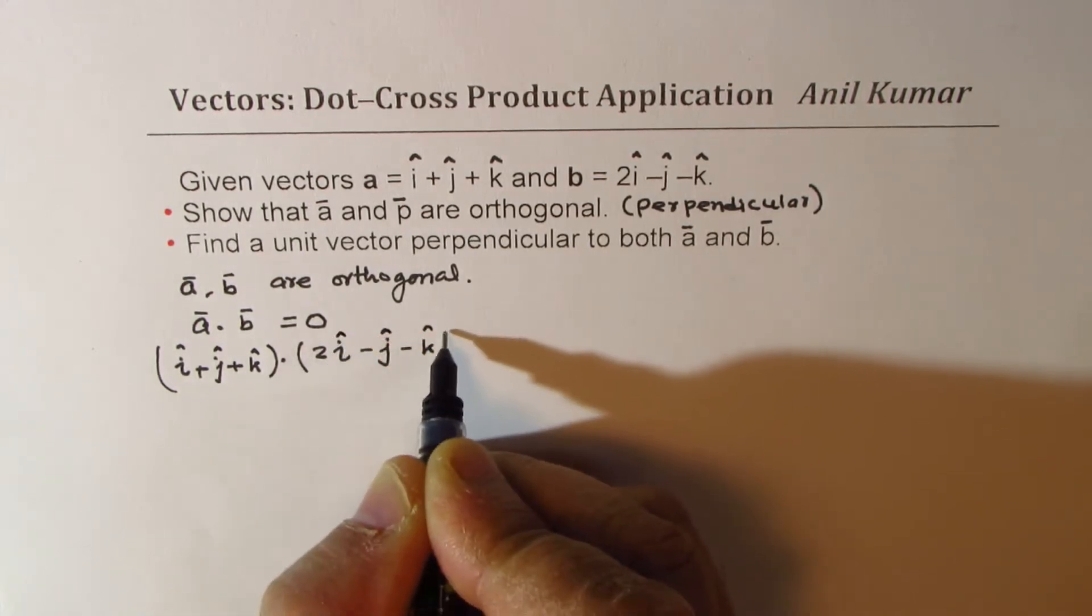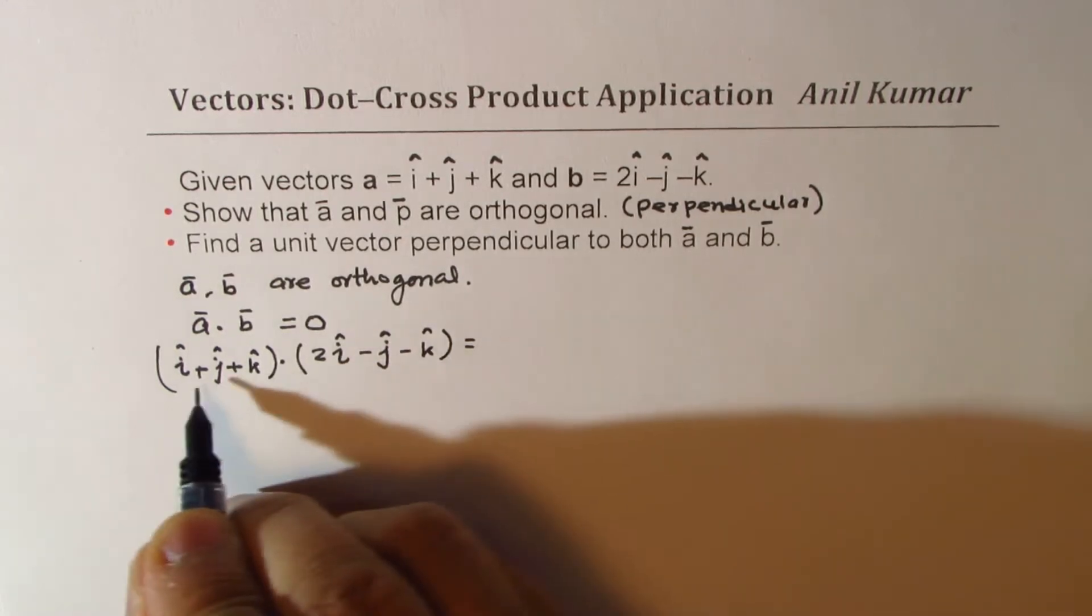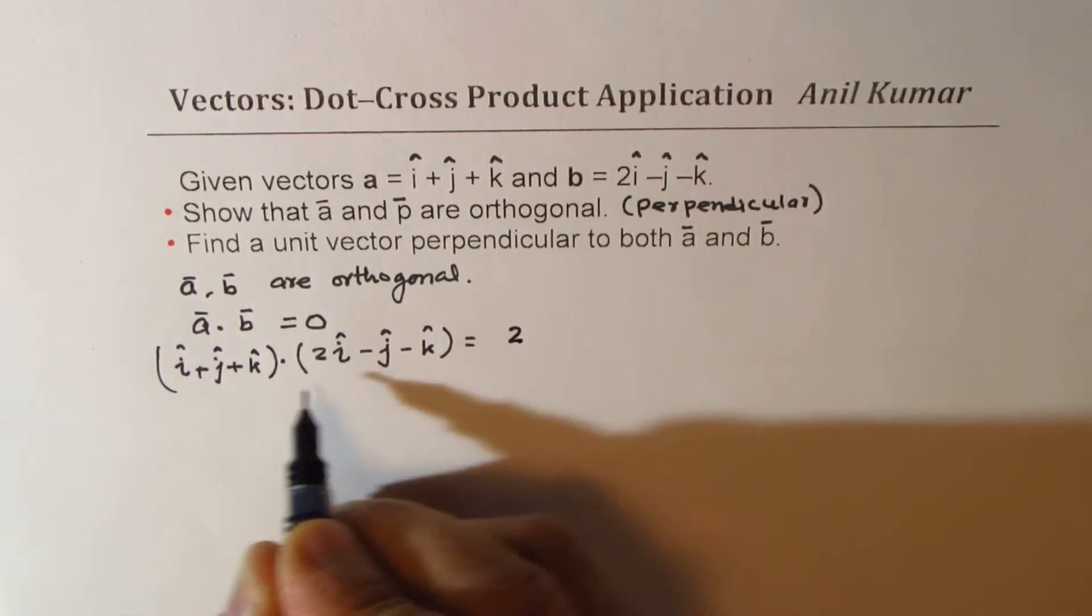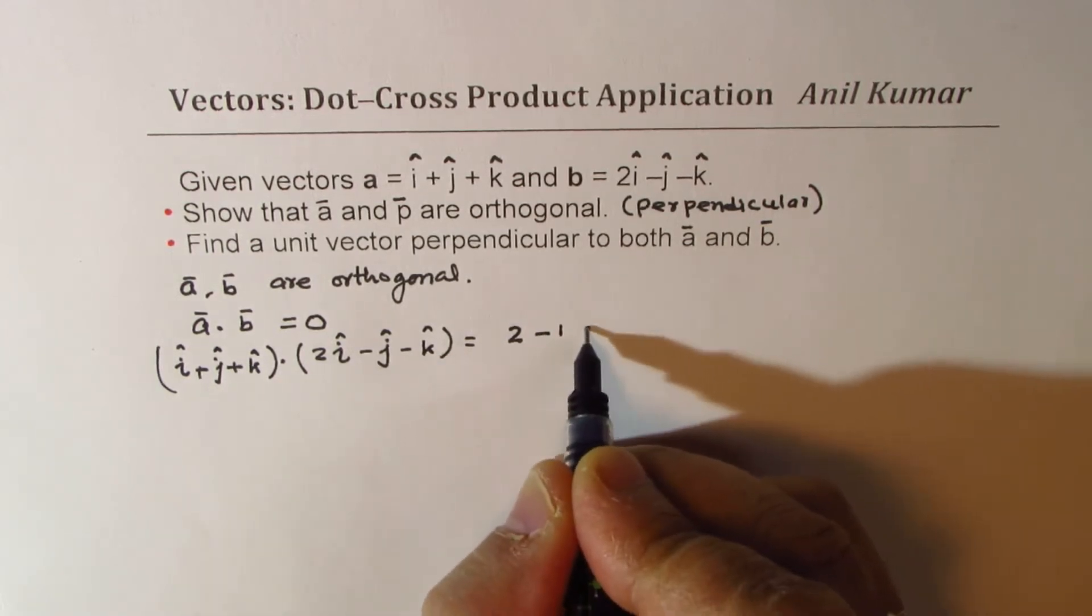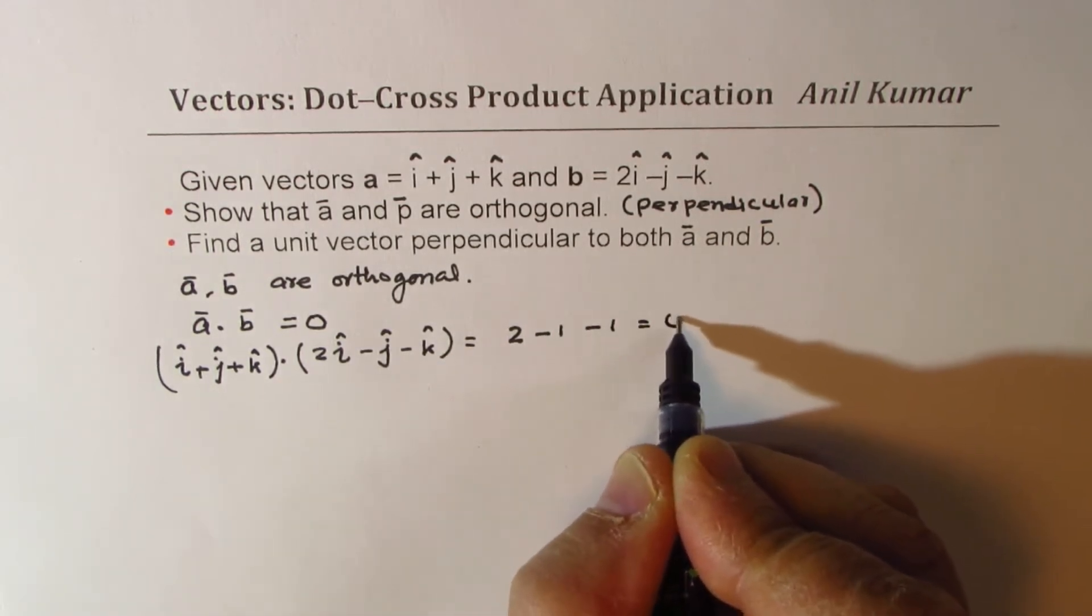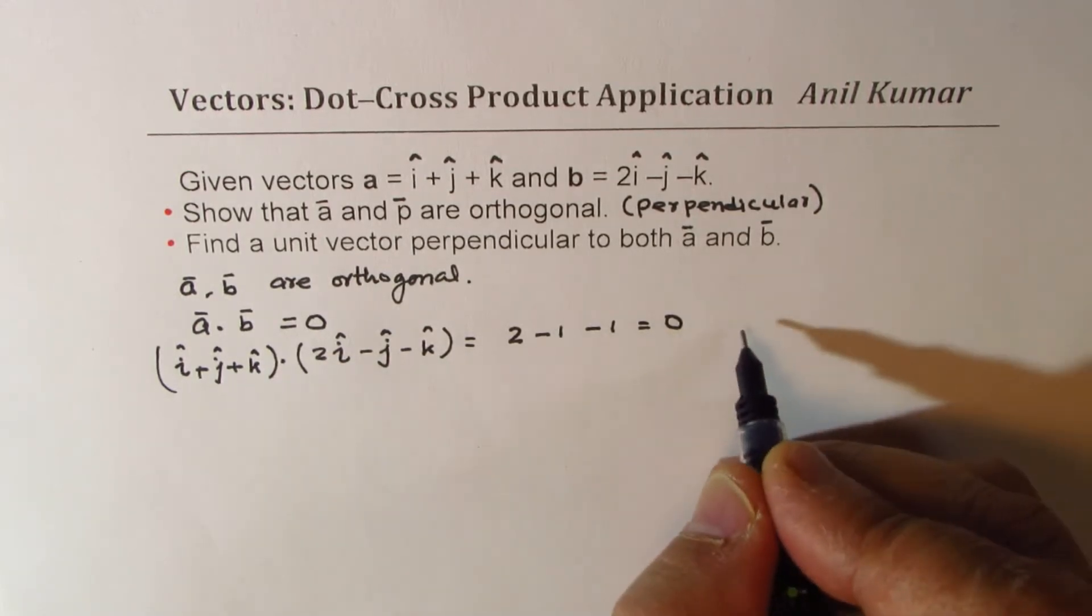So (i + j + k) dot (2i - j - k) is equal to 2 minus 1 minus 1, and that gives you 0. Since the dot product is 0, we have shown that they are perpendicular.